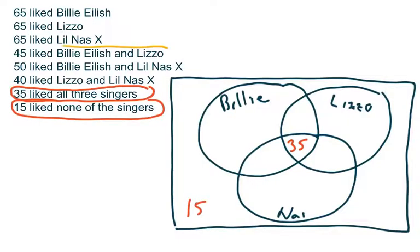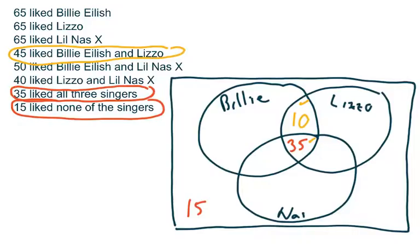Let's start here: 45 people liked Billie Eilish and Lizzo. In the Venn diagram, Billie's circle and Lizzo's circle cross each other. The temptation is to put 45 right there in that overlap, but that turns out to be wrong. The 45 encompasses the 35 who like all three singers, plus the region for people who like only Billie Eilish and Lizzo. So those two overlapping regions have to add up to 45. We've already got 35 accounted for, and there are 45 total who like Billie and Lizzo, so there must be 10 more — people who like Billie Eilish and Lizzo but not Lil Nas X.